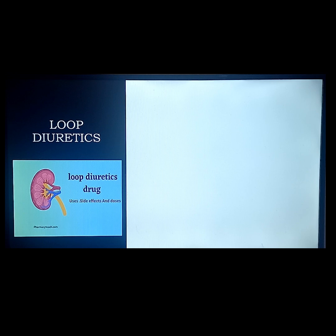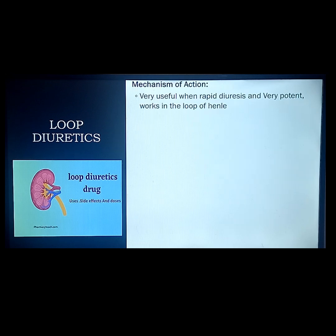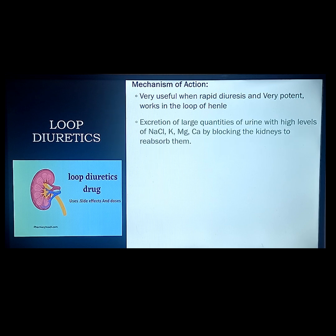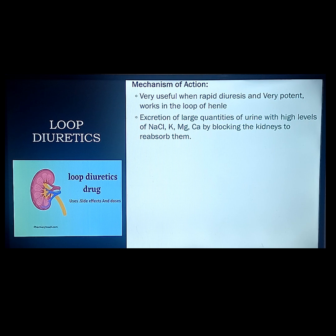Our next diuretic is loop diuretics — among all diuretics, probably the most well-known. Loop diuretics are very useful when rapid diuresis is needed, and they are very potent, working on the loop of Henle. They promote excretion of large quantities of urine with high levels of sodium, potassium, magnesium, and calcium by blocking the kidney's reabsorption.